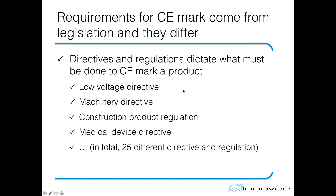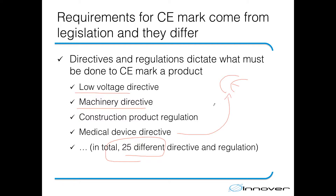Even though the CE marking symbol is the same for every product — we always have the CE symbol, which can be found on toys, lifts, escalators, cell phones, computers and so on — how you get there if you are a manufacturer of low voltage products, machinery or medical devices varies quite a lot. The variation is due to the legislation that must be used to CE mark the product. For example, we have the low voltage directive and the machinery directive, each dictating differently how you must CE mark. In total we have 25 different laws and regulations, each telling a different story on how you can get there even though the goal is the same.